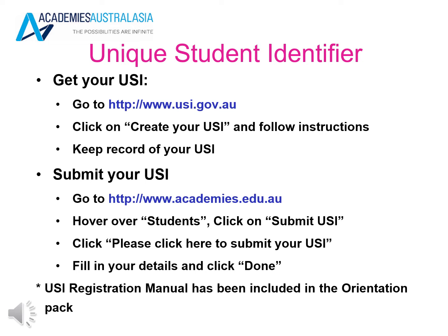To submit your USI, go to www.academies.edu.au, hover over 'Students' and click on 'Submit USI'. Click 'Please click here to submit your USI', fill in your details and click done. A USI registration manual has been included in the orientation pack.